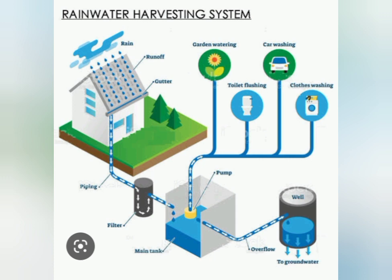The next IEC material you need to display in your HWC is the Rain Water Harvesting system. You need to store water from rain, which can then be used for garden watering, medicinal plant watering, toilet flushing, and cleaning purposes.